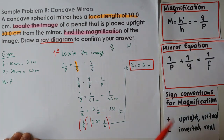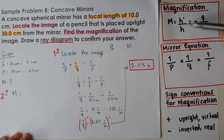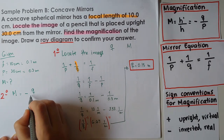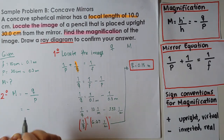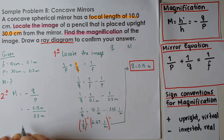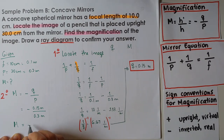Knowing Q, we can easily get the magnification. We don't have the height of the pencil, so we use the distance form: magnification equals negative Q divided by P. That is negative 0.15 meters divided by 0.3 meters, giving a magnification of negative 0.5.